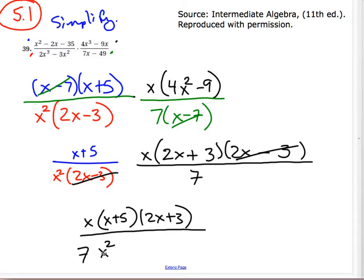Here, this x squared is being multiplied. This x is being multiplied. I could simplify those two. So one of these x's cancel off one of those. So in the end, I'm left with x plus 5 times 2x plus 3. So that would be the simplification of that one there.